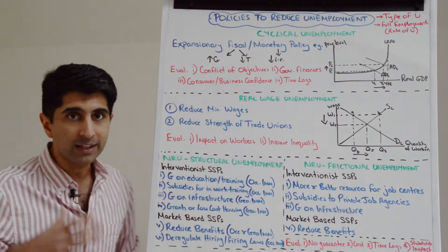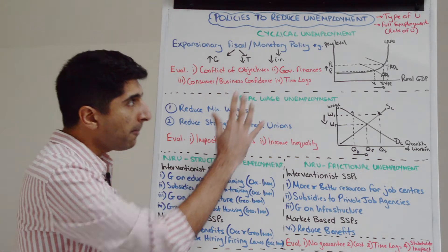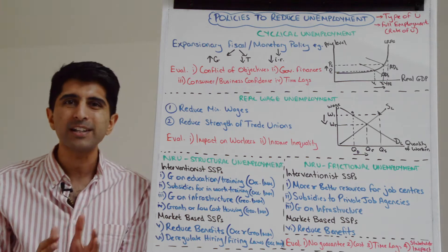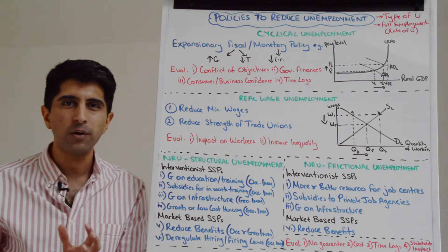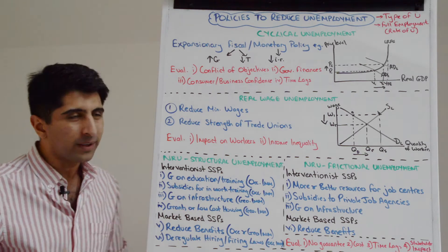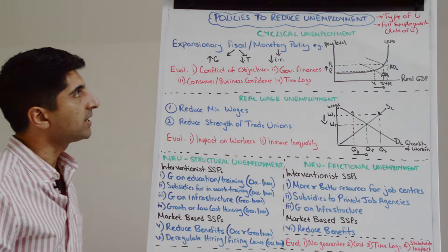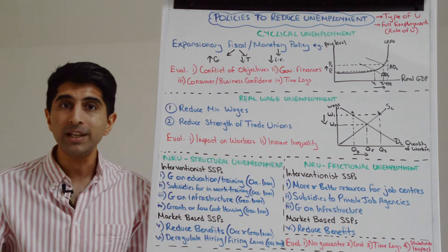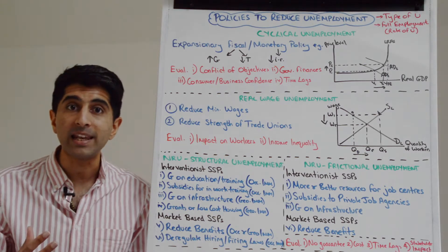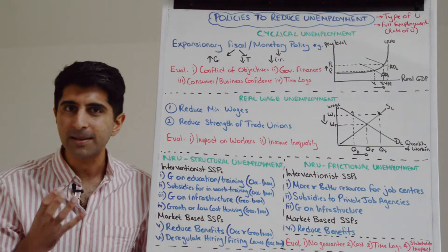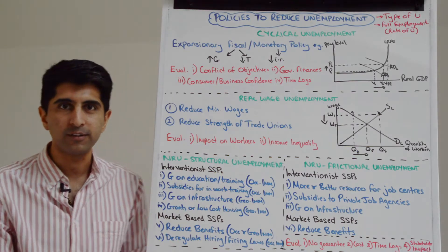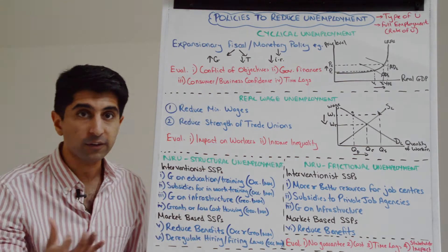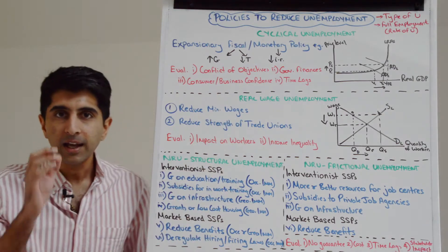We're going to start by looking at cyclical unemployment. Remember that cyclical unemployment occurs in a recession when aggregate demand is very low and therefore we see unemployment that comes from it. So if we want to reduce cyclical unemployment we need to try and boost AD. Well, we can use expansionary demand-side policies to do that — either expansionary fiscal policy or expansionary monetary policy.